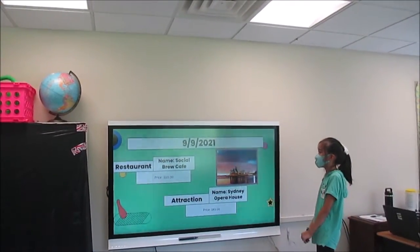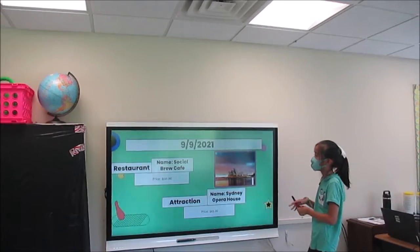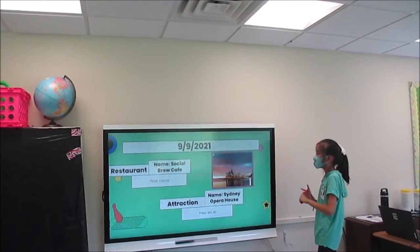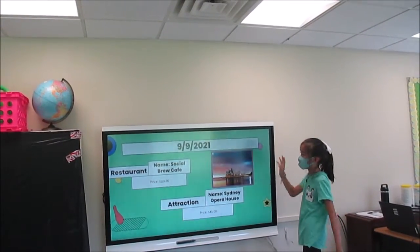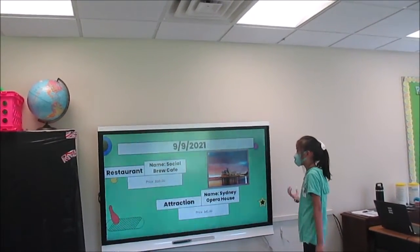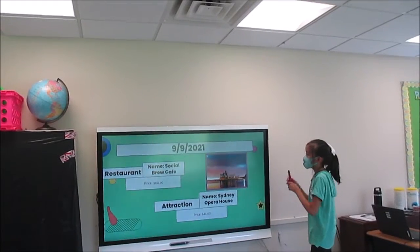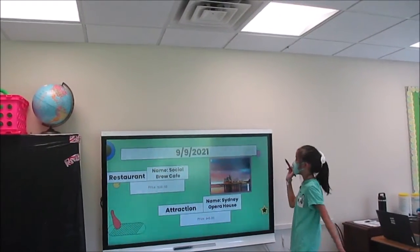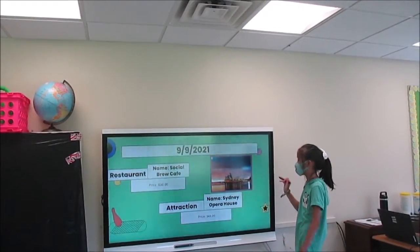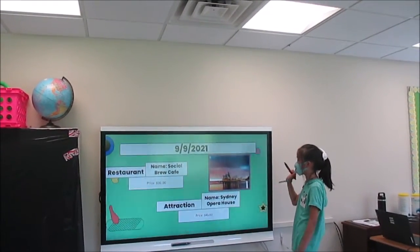For my last day, I'm going to the Social Group Cafe to eat and the price is about $110. The attraction is the Sydney Opera House, which costs $43.